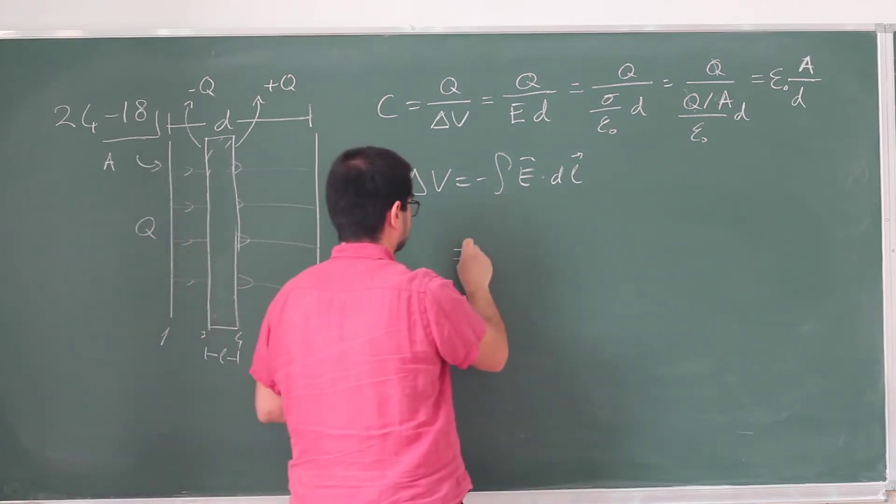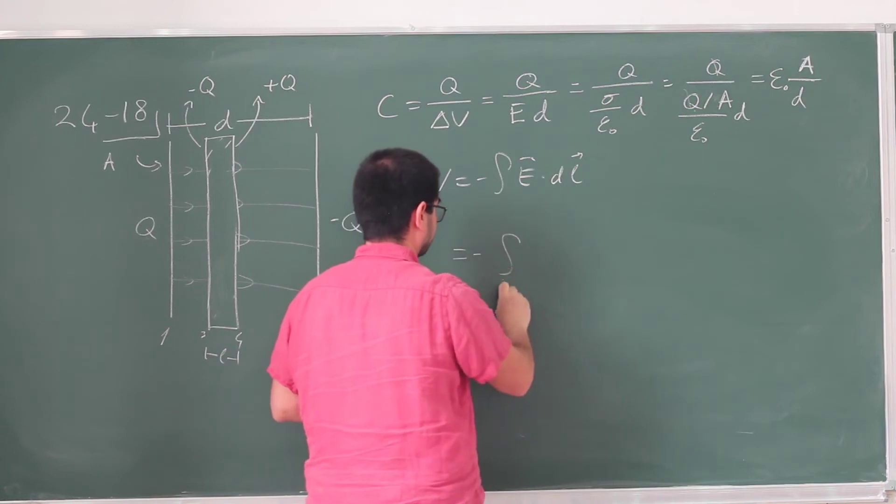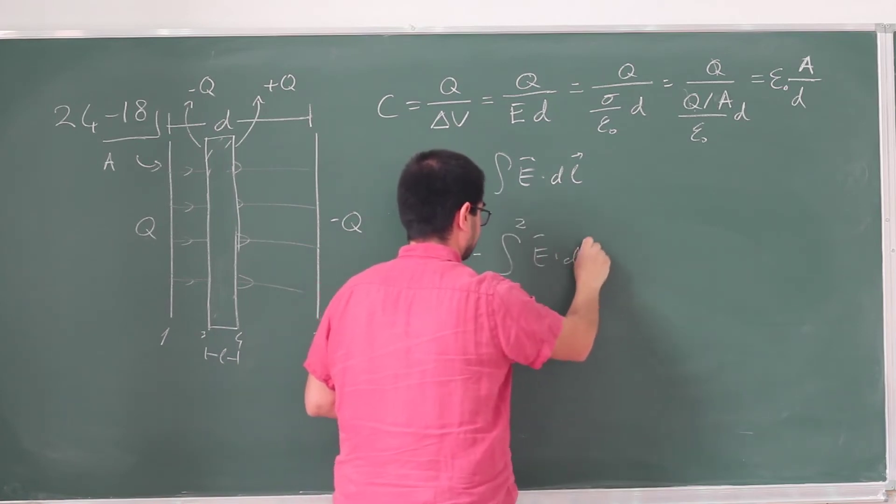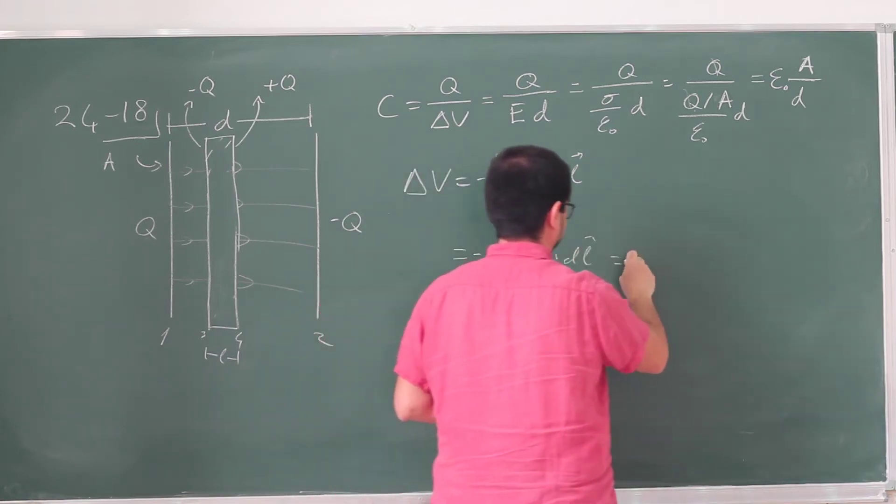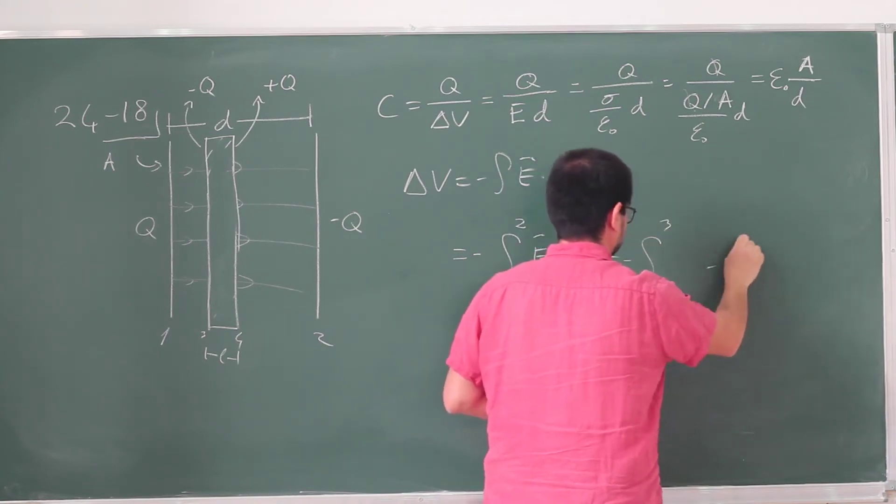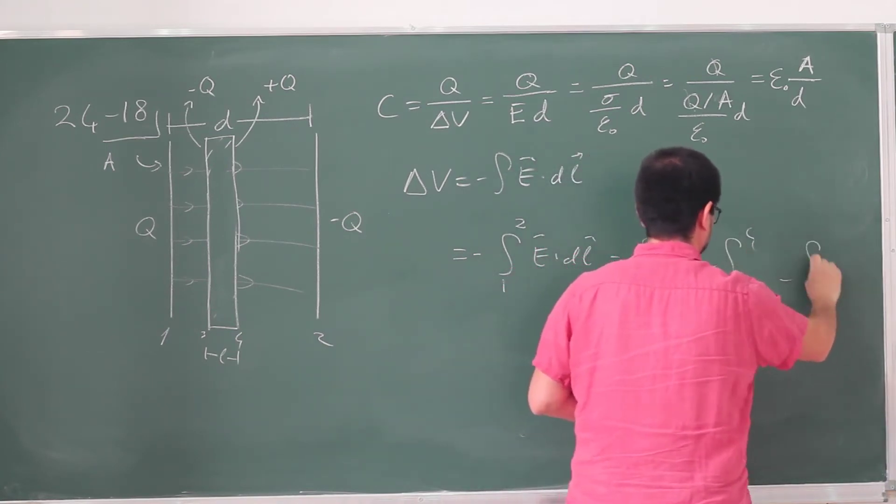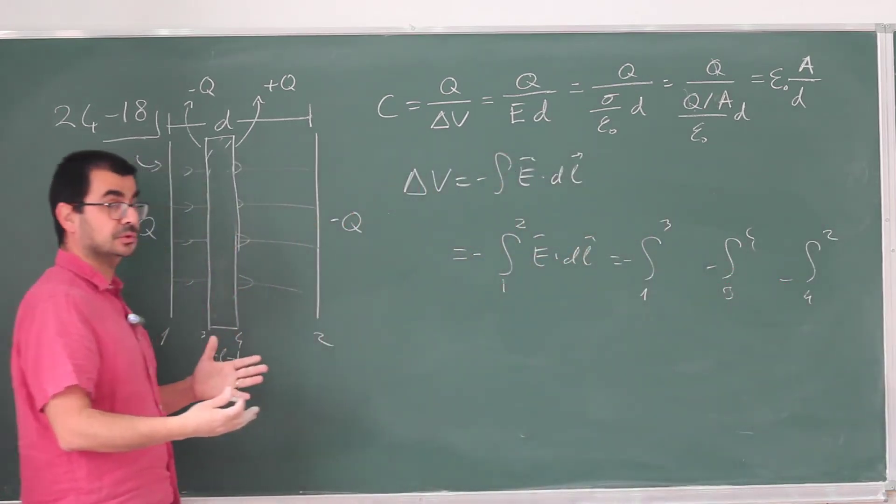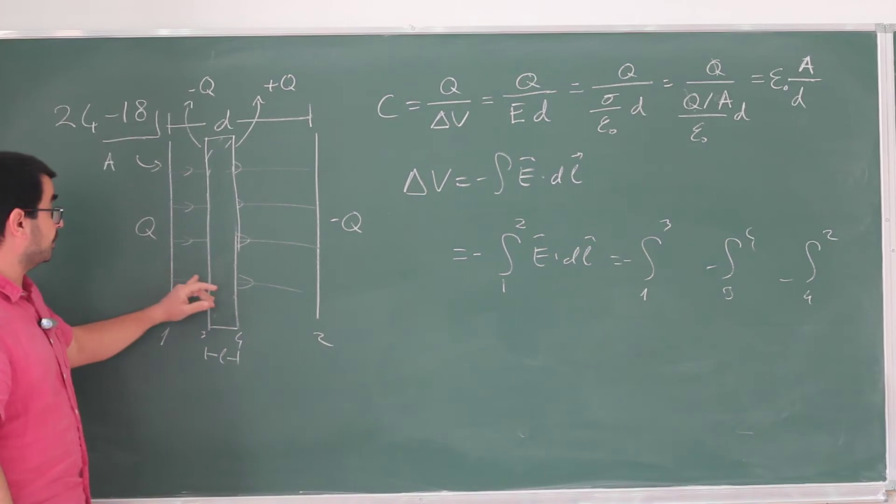So this one is going to look like an integral from 1 to 2, E dot DL. But this is, in fact, an integral from 1 to 3, minus an integral from 3 to 4, minus an integral from 4 to 2. This integral is going to divide into three parts. And the first part you can take. So they're not giving you the location of this. It doesn't really matter.